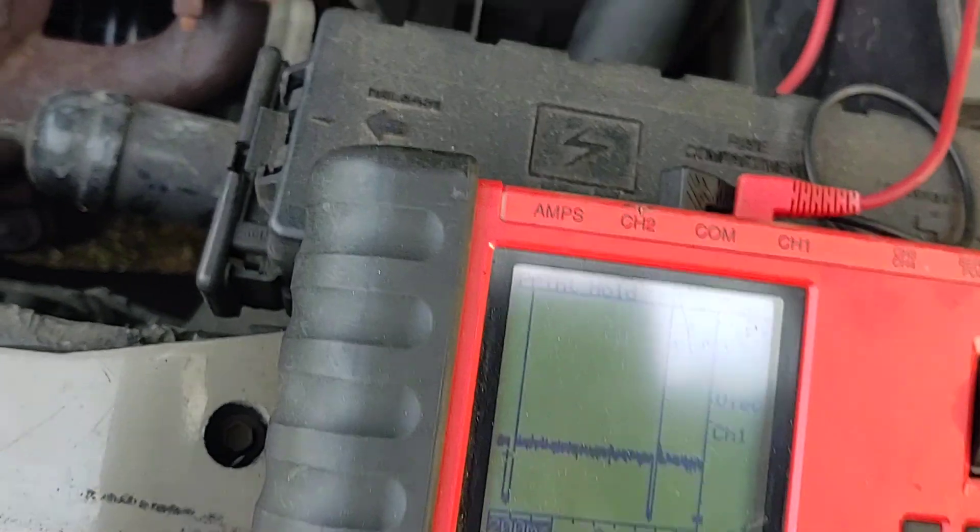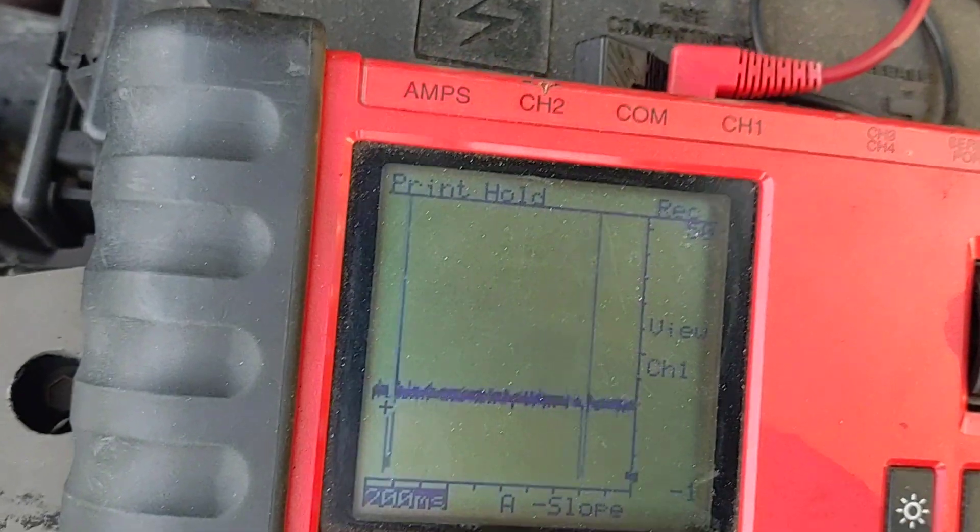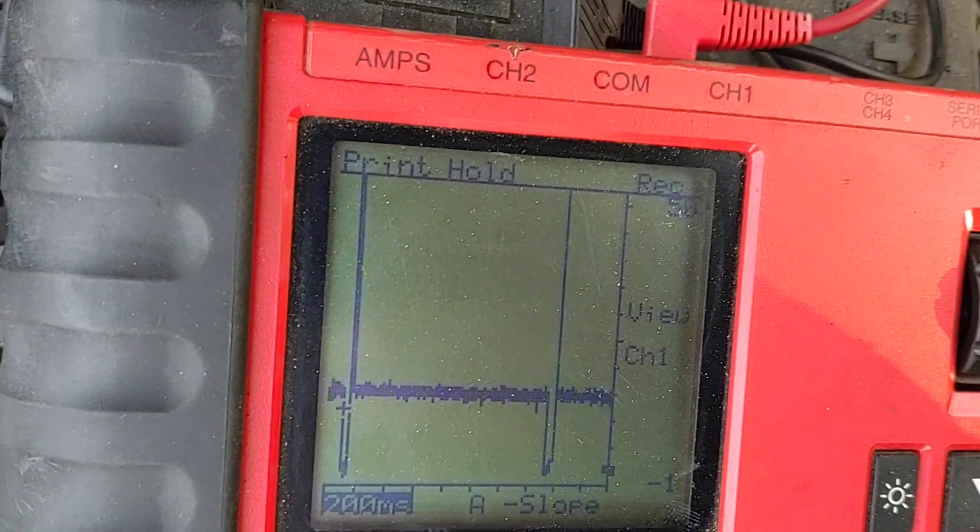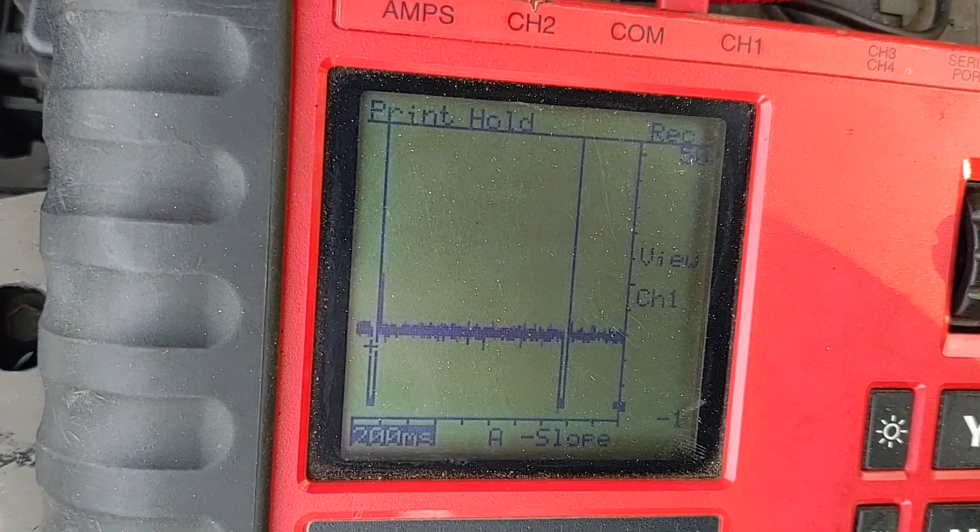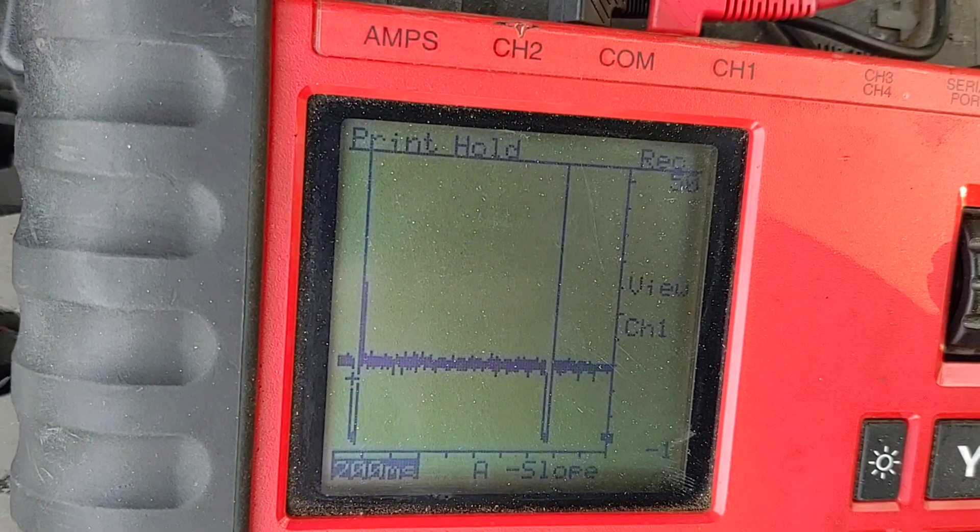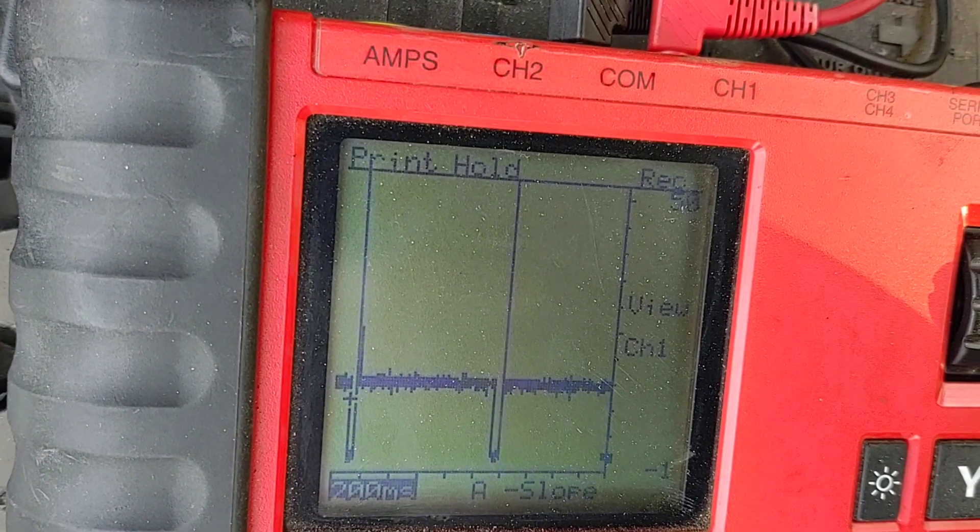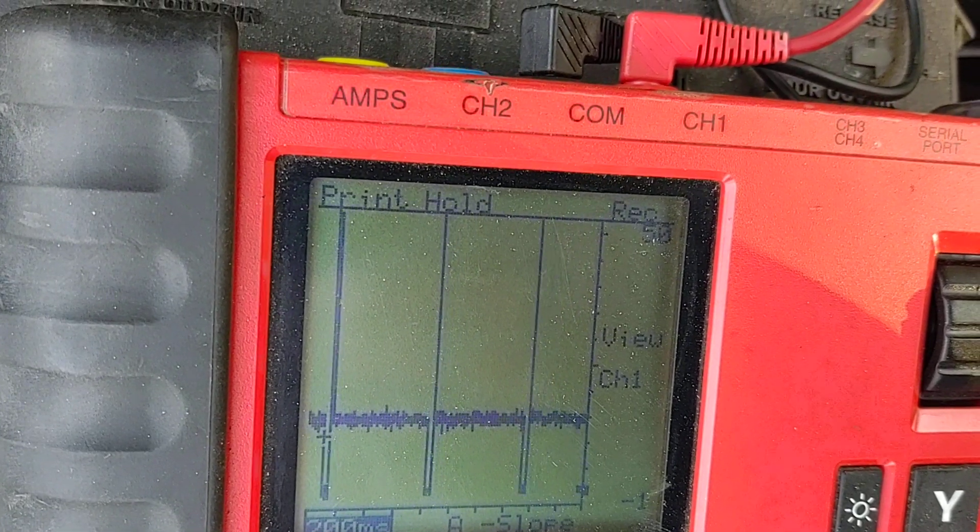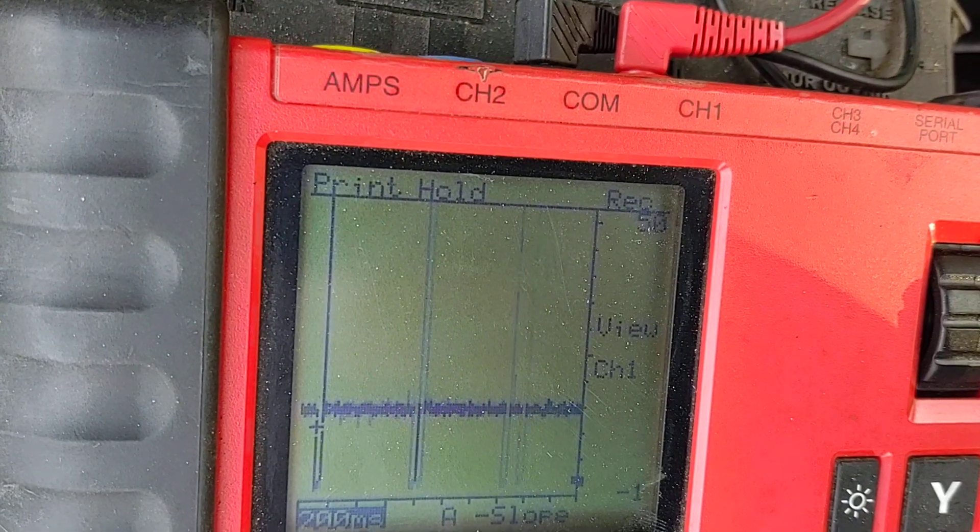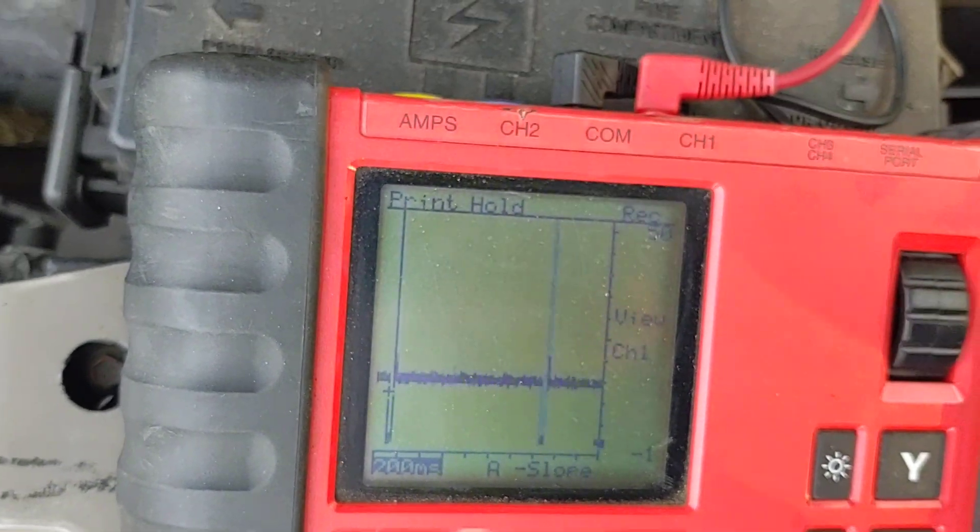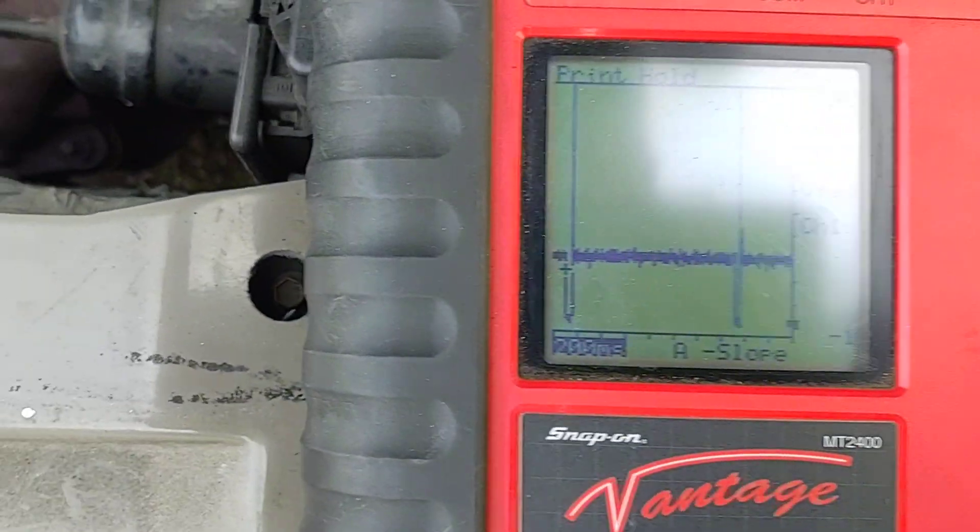Now if I reach up to the throttle body, this is an old car and has a drive-by cable. If I rev the engine up a little bit, as I increase the RPM, you're going to notice those waves become closer together. Because at a higher RPM, the injector needs to fire more often.